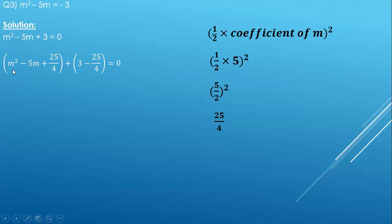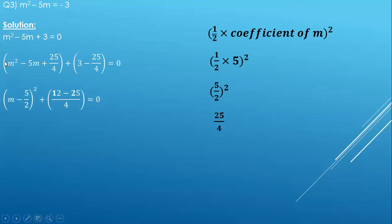This equation is in the form of a squared minus 2ab plus b squared, which we reduce to a minus b the whole square. To form the perfect square, we take the square root of the first term, the sign of the second term, and the square root of the third term. The square root of the first term gives m, the sign is minus, and the square root of 25 upon 4 is 5 upon 2.